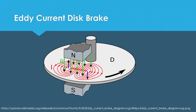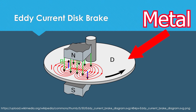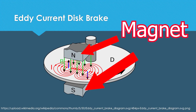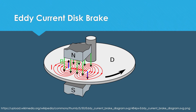This picture shows an eddy current disc brake. The disc is made of metal and this is a magnet, or a source of magnetic field. While the disc rotates, the magnetic field starts changing in the disc and due to Faraday's law, voltage is induced in the disc and eddy current flows.